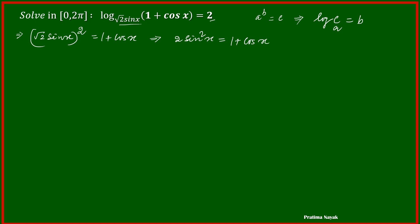In the next line, we will convert sin square as cos square. So 2 times 1 minus cos square x is equal to 1 plus cos x. On further simplification, it will be 2 minus 2 cos square x is equal to 1 plus cos x, or it will be 2 cos square x plus cos x minus 1 equals 0.